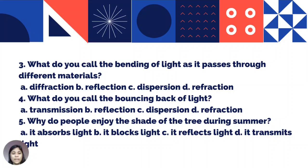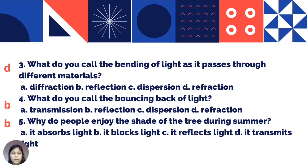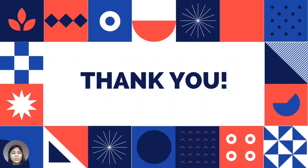Number three: what do you call the bending of light as it passes through different materials? A: diffraction, B: reflection, C: dispersion, or D: refraction. Number four: what do you call the bouncing back of light? A: transmission, B: reflection, C: dispersion, or D: refraction. Number five: why do people enjoy the shade of a tree during summer? A: it absorbs light, B: it blocks light, C: it reflects light, or D: it transmits light. Correct answers: number three — D, refraction; number four — B, reflection; number five — B, it blocks light.